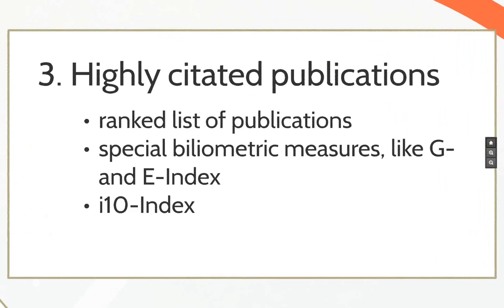The most important practical step is to make a ranked list of your publications. This lets you see which publications attracted the most citations, and you can analyze why — was it the journal, the co-author, or the subject? That gives you ideas about how to proceed with your career. There are also special indices like the g-index and e-index, which give more weight to highly-cited papers, and the i10-index used by Google Scholar.